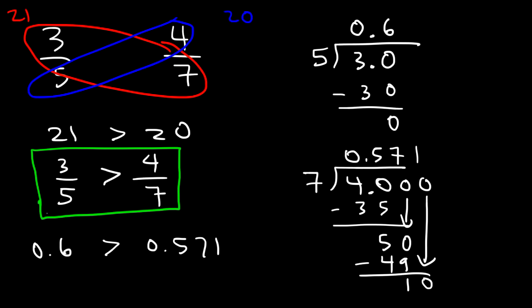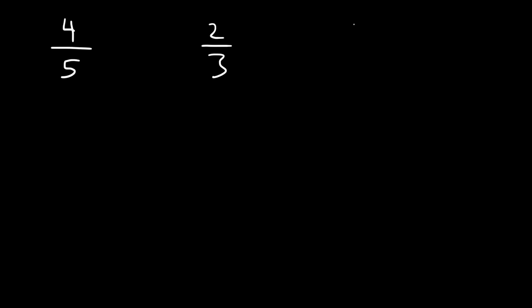There are different techniques you can use to compare fractions. Now, what do you do if you need to compare 3 fractions instead of 2? The cross multiplication technique works if you're comparing 2 fractions at a time, but if you're comparing 3 fractions, you can convert all 3 into decimals, or get a common denominator between all 3. What is a common multiple of 3, 5, and 6? 30 is a common multiple — it's divisible by 5, 3, and 6.